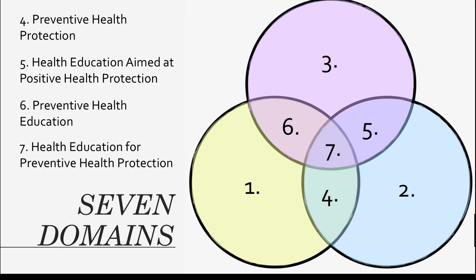The fifth domain is a combination of health protection and health education, known as health education aimed at positive health protection. This domain includes warning the youth of health risks to protect them in the future. A common example is pushing for a ban on smoking and tobacco advertisements. The sixth domain is a combination of health education and prevention, known as preventive health education. This means providing information to young adults to stop them from doing something harmful. A common example is providing smoking cessation advice and information to current smokers.